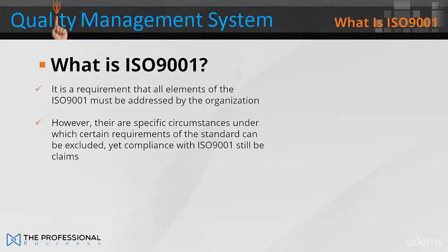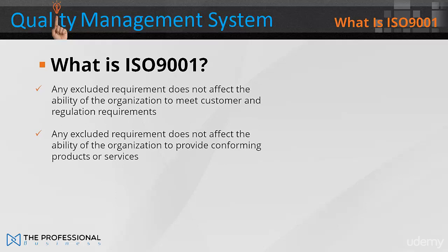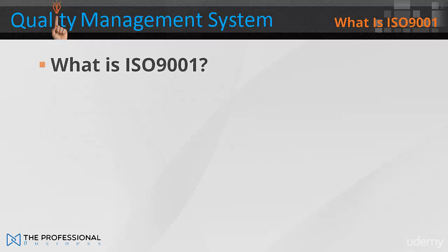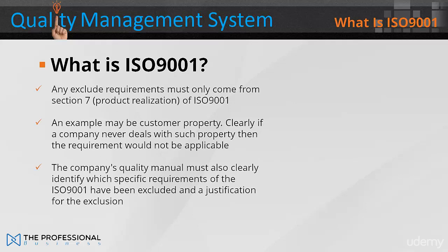It is a requirement that all elements of the ISO 9001 must be addressed by the organisation. However, there are specific circumstances under which certain requirements of the standard can be excluded, yet compliance with ISO 9001 can still be claimed. Any excluded requirement must not affect the ability of an organisation to meet customer and regulatory requirements, nor to provide conforming product or service. Any excluded requirement must come from section 7, the product realisation section. For example, if a company never deals with customer property, then that requirement would not be applicable. The company's quality manual must clearly identify which specific requirements have been excluded and the justification for exclusion.